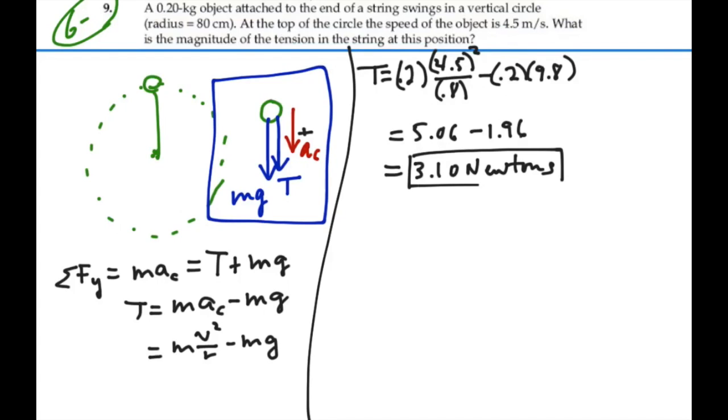That is the tension in the cord, and it is directed downward towards the center of the circle. That's not the net force. Net force would be this tension force plus the weight of the object. But this is the tension, so the tension is being helped by the weight in this case. This is the tension towards the center of the circle, 3.1 newtons.